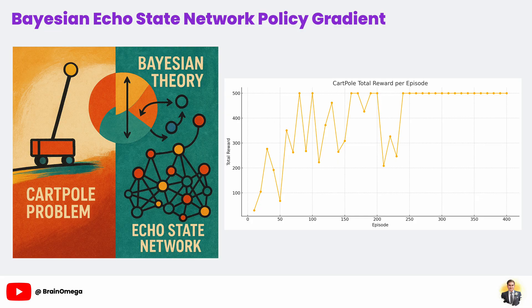The output is averaged across these passes, which not only makes the policy more robust, but also gives us a measure of uncertainty in the agent's actions. This technique, sometimes called Monte Carlo dropout, helps the agent explore more intelligently and avoid overconfident, risky decisions.